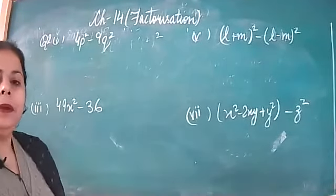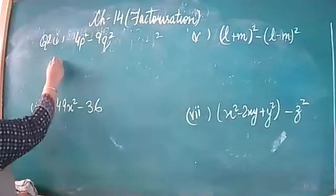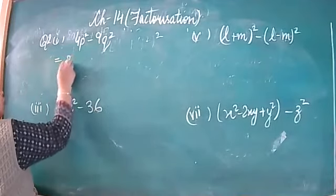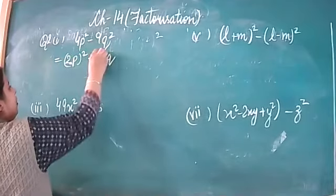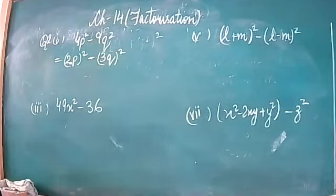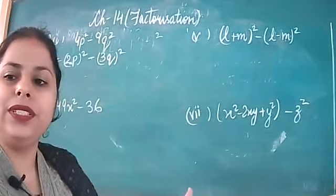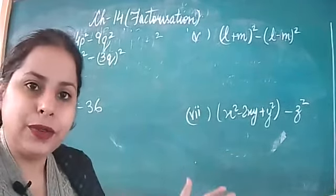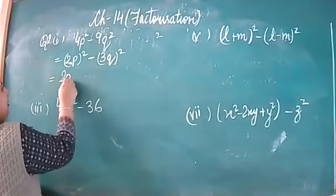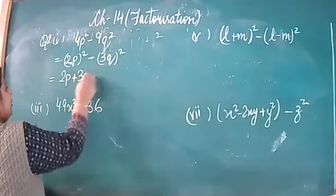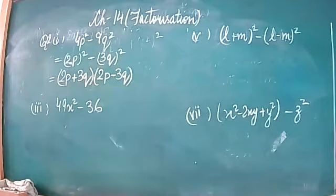Look at the board. In the first part there are two terms. The first term 4p squared can be written as (2p) whole square, and the second term 9q squared can be written as (3q) whole square. So this becomes the identity a squared minus b squared, which can be written as (a plus b)(a minus b). So the factors are (2p plus 3q)(2p minus 3q).